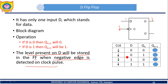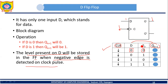Now let's understand the operation of the D flip-flop with the help of a truth table. The arrow in the table indicates when a negative edge is detected on the clock pulse. Consider the first row: when a negative edge is detected and D is 0 with present state Qn = 0, what will be the next state? In the D flip-flop, the next state depends on D, not on the present state. So if D is 0, the next state will be 0.